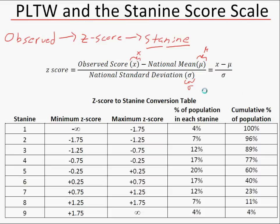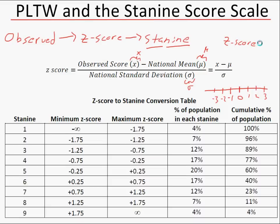Z-scores are on a scale where 0 is at the center. Students who did better than average are on the right side, and those scores are generally going to be between 0 and 3. On the left side, you have negative values: negative 1, negative 2, negative 3. The z-score shows how many standard deviations a student fell from the mean. A z-score of 1 means they scored one standard deviation above the mean; a z-score of negative 0.25 means their score was a quarter of a standard deviation below the national mean.